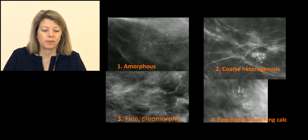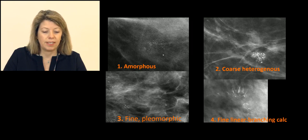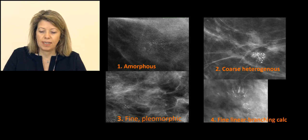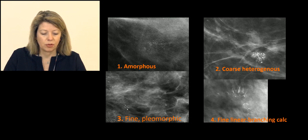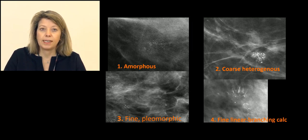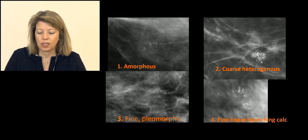Examples: amorphous calcifications with very low density and low size — suspicious, finally confirmed as DCIS. Coarse heterogeneous dense calcifications with irregular shape — also DCIS. Fine pleomorphic with several calcification clusters — all magnification views — with different sizes and orientations — very suspicious. Last image: fine linear branching with segmental orientation and triangular shape — typically malignant, suggestive of DCIS.